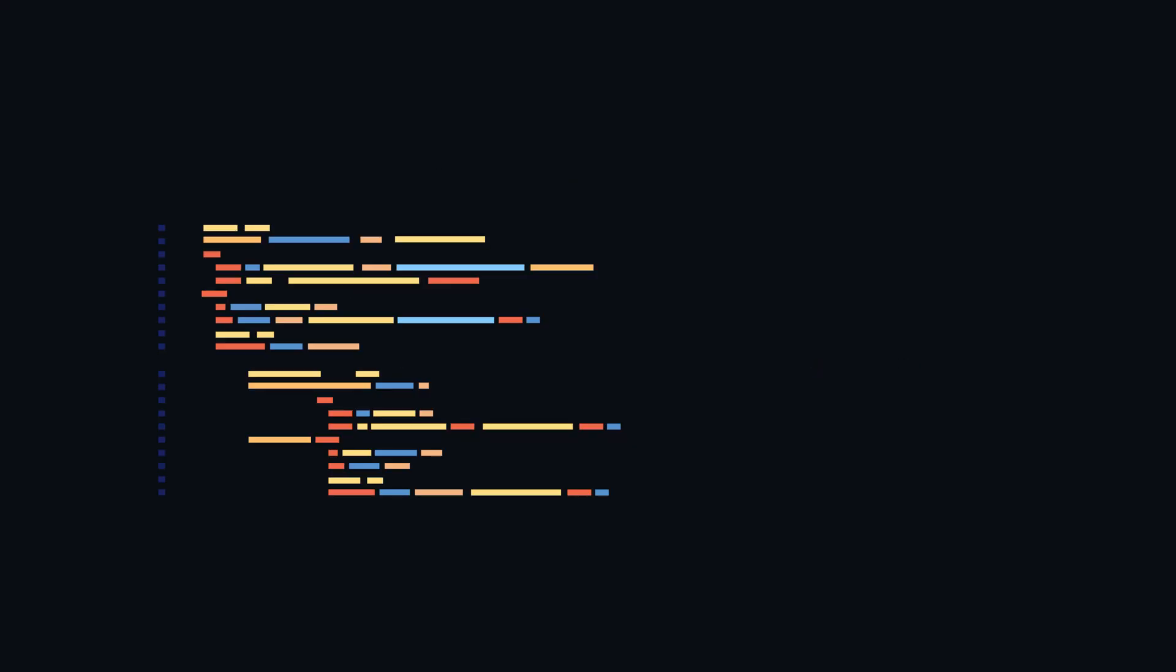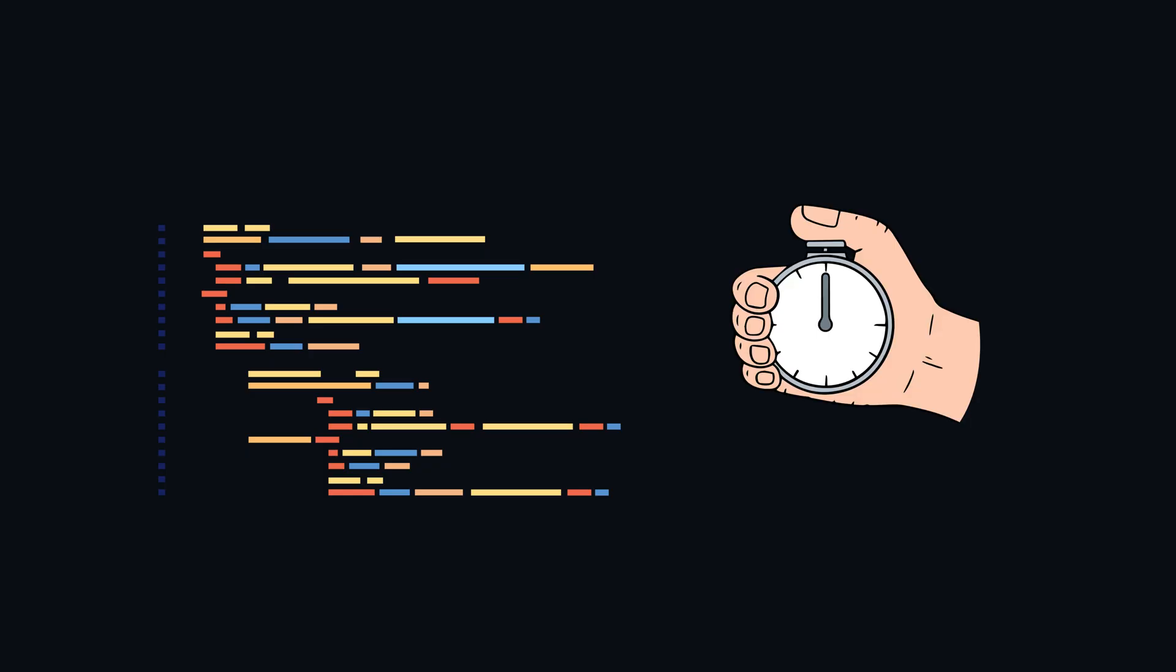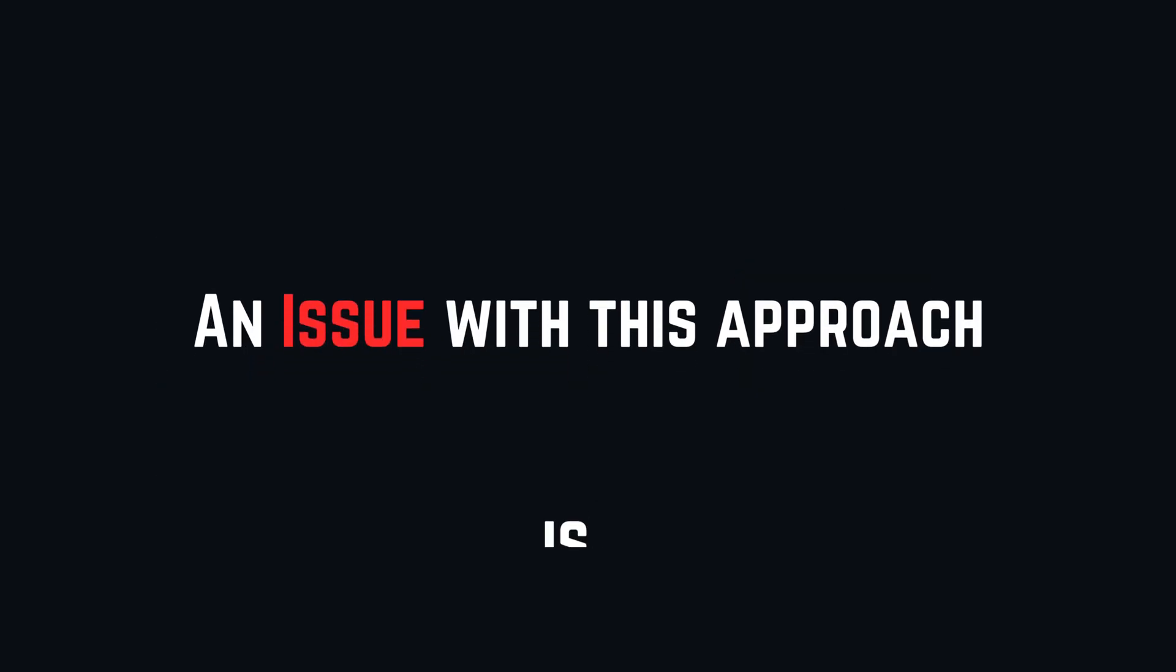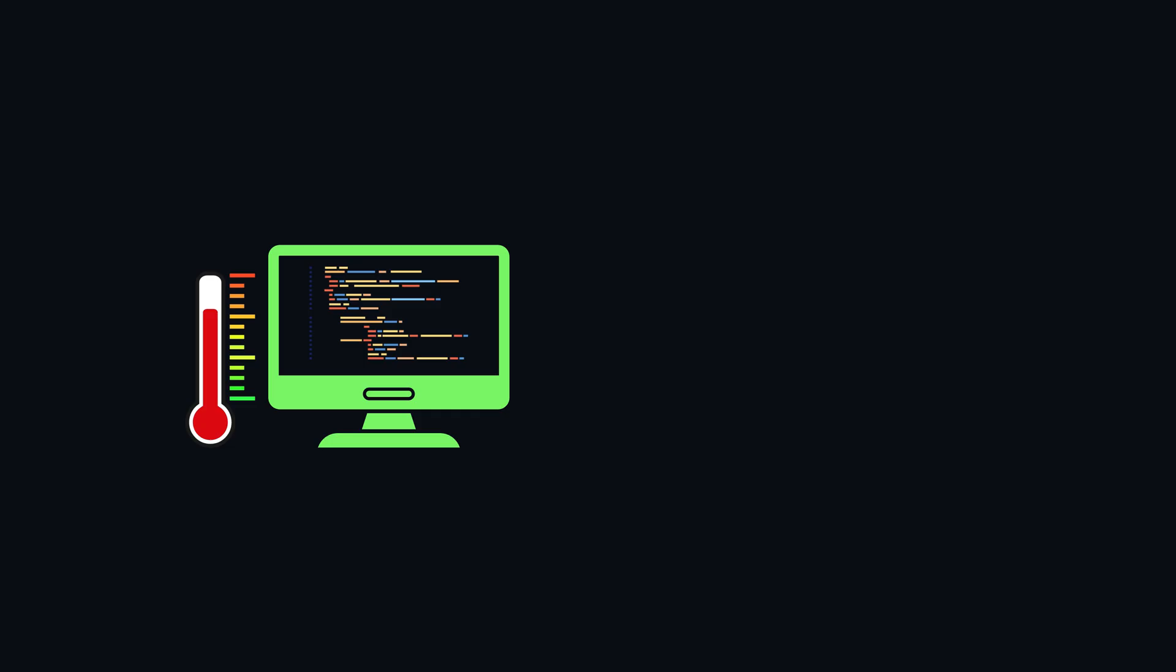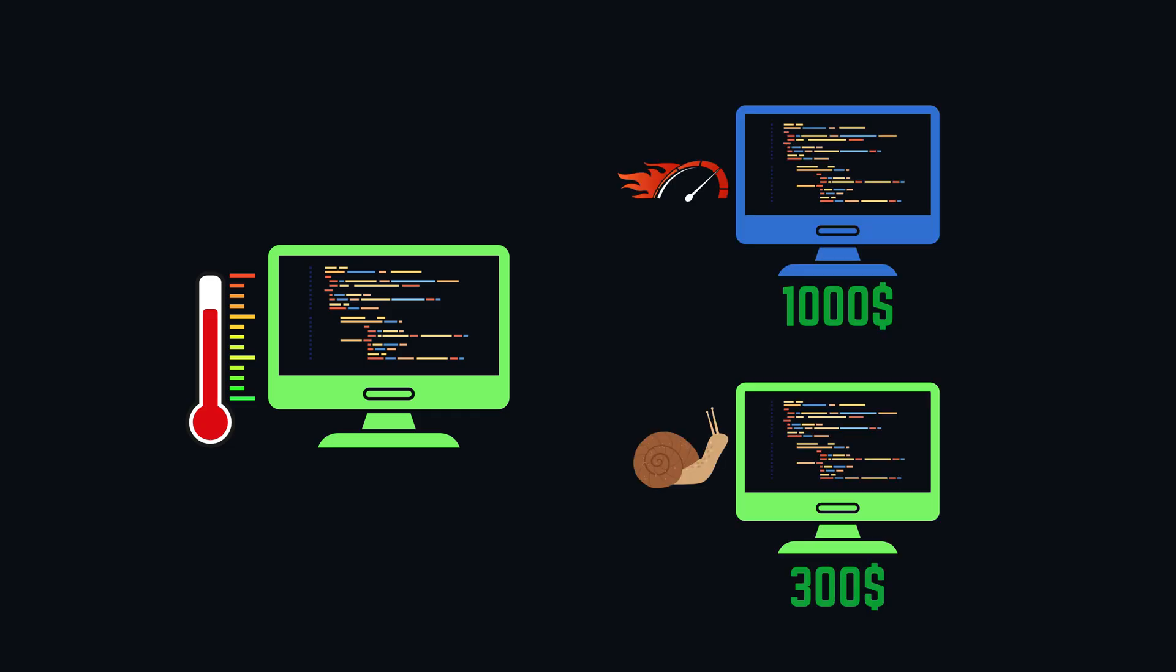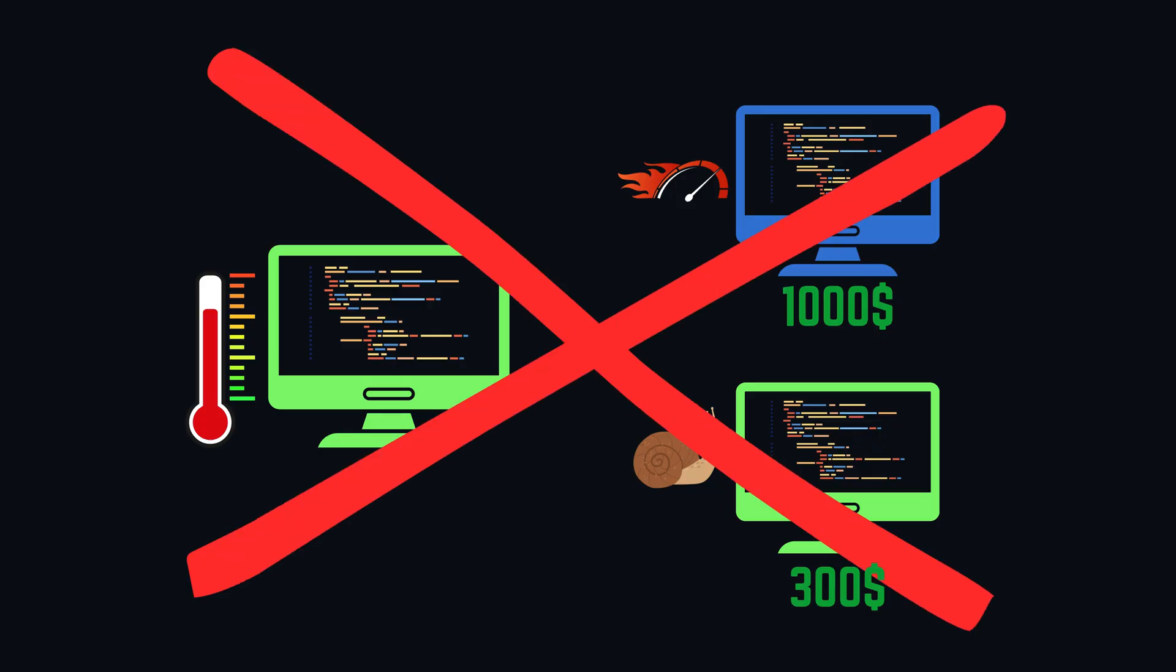One way to measure how fast the program solves a problem could be by measuring the execution time. An issue with this approach is that every time we measure, we could get varying execution times because of external factors like heat or different computers.